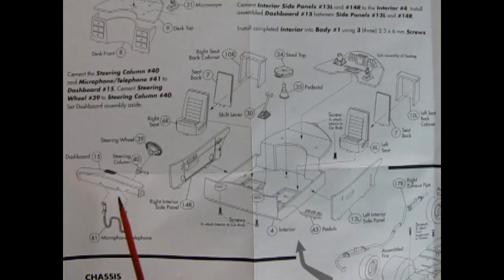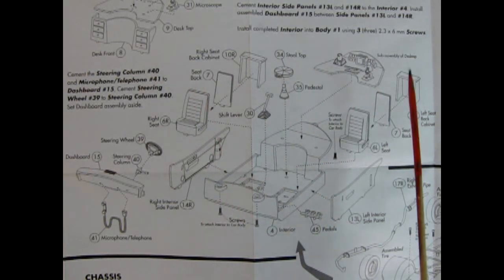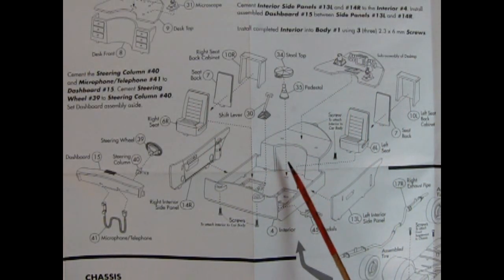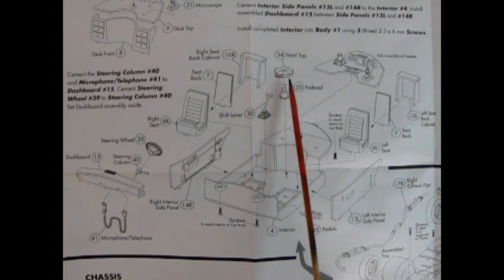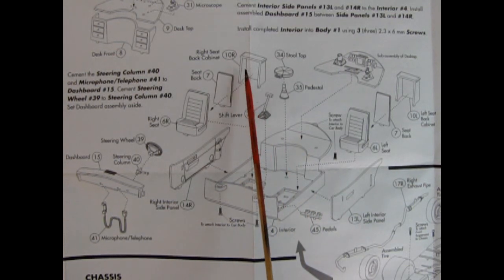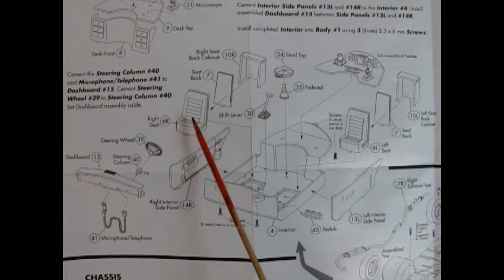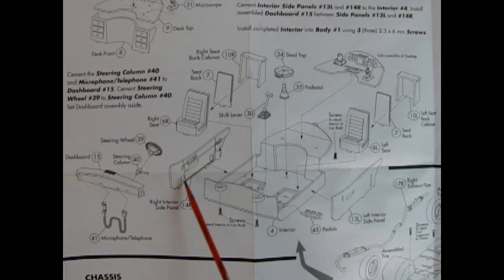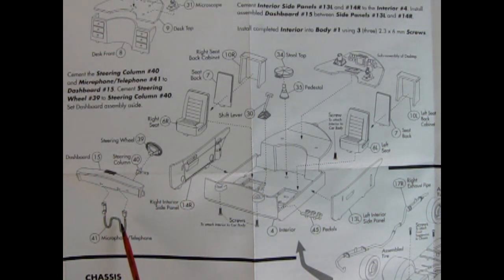Carrying on with our interior we have the exploded view. So we'll start at the back again. We've got our sub-assembly of our desktop which we did in the previous step being glued in place on the interior pan. Then we have the pedestal which goes in this hole, the stool top, our shift lever which will drop down here, the cabinets that go on the back of the seats. We have the seat back, the right side seat, the right side interior panel, then our steering wheel, our steering column, our dashboard, the microphone and telephone arrangement which will be up under here.